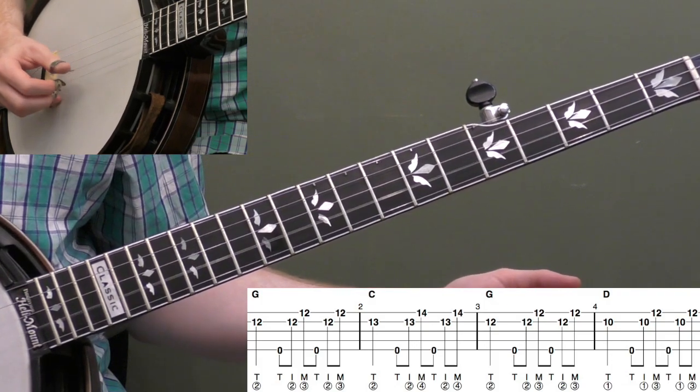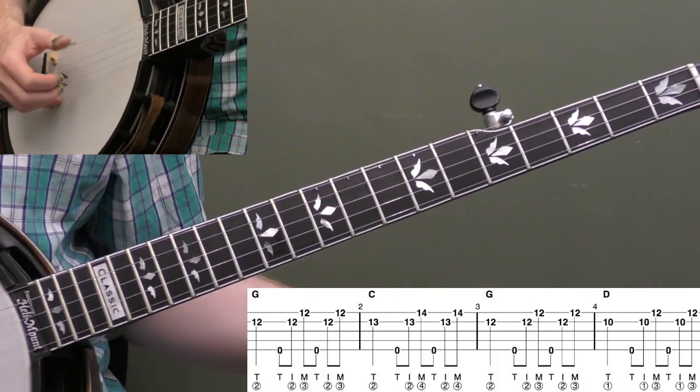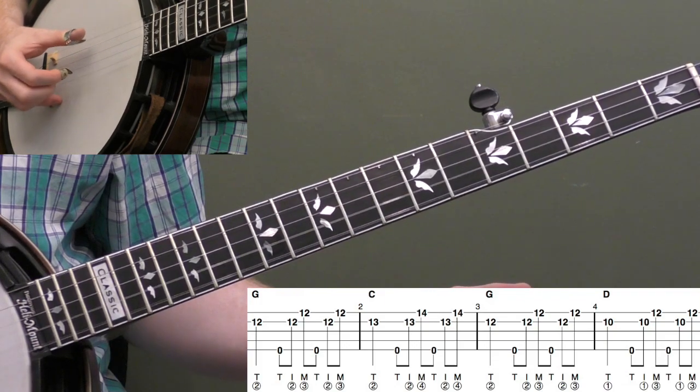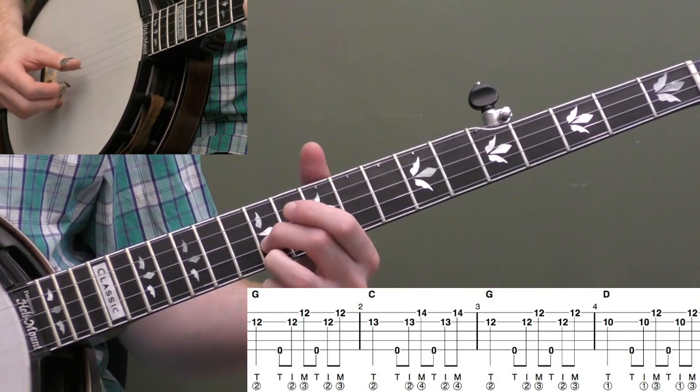Thumb on the second string and then five, two, one, five, two, one. Those are my strings: T-I-M. That's what we're doing, just doing it up in this position.